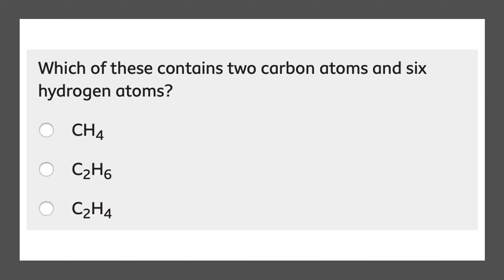Next question: which of these contains 2 carbon atoms and 6 hydrogen atoms? Carbon is C and hydrogen is H. So we need 2 carbon atoms. Over here, we only have 1 carbon atom, so it can't be this one. Over here, we have 2 carbon atoms and 6 hydrogen atoms, so we know that this one is correct. This one won't be correct because we have 2 carbon atoms, but we have 4 hydrogen atoms. So this would be incorrect. And that will get you 1 mark.